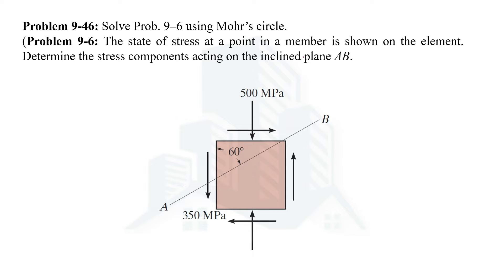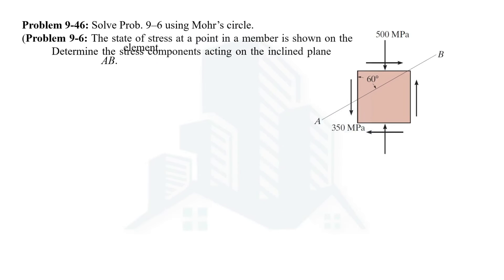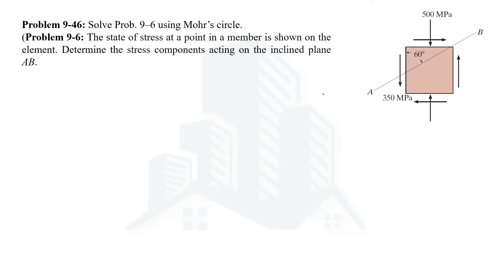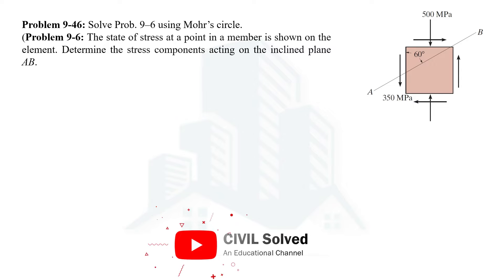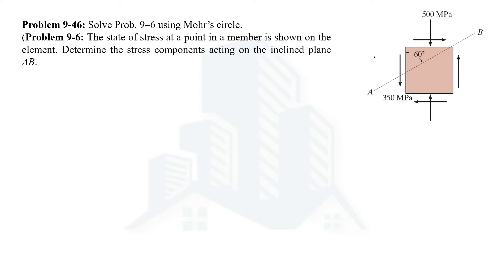So this is problem number 6. In this problem, this is the current state of stress and it is being asked to determine the stress components acting on inclined plane AB. Before solving this problem using Mohr's circle, we should know the two points so that we can draw the Mohr circle, and those two points are determined by taking two faces of this element. Those two faces could be these two or these two — both would be equal because this element is in equilibrium.